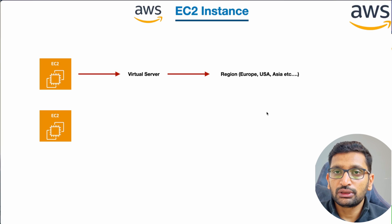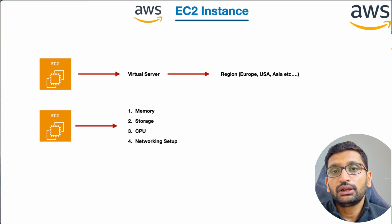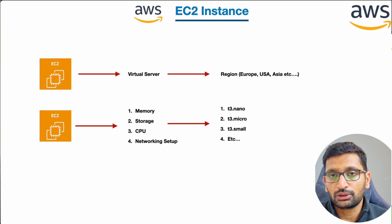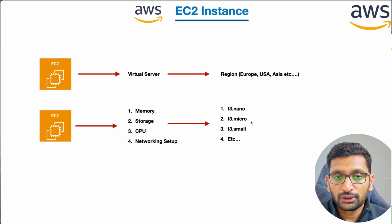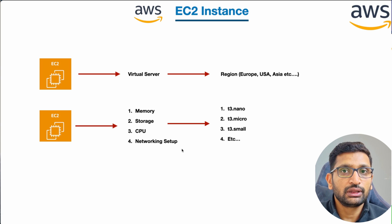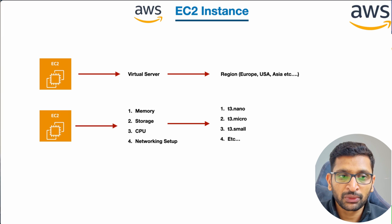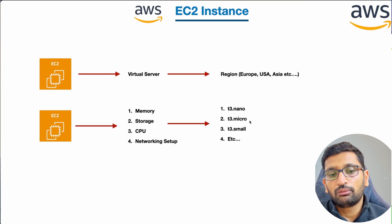After deciding the region and choosing a Windows-based EC2 instance, we need to choose the memory, CPU, storage, and network setup. These are covered by the instance type — options like t2.nano, t2.micro, and t3.small come with different CPU and memory configurations. Network setup is separate, which I'll explain further in the next chapter covering private subnets, VPC, public subnets, and related networking concepts.